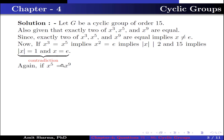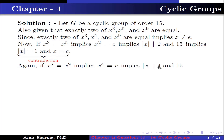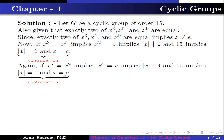Again, if X⁵ = X⁹, then X⁴ = identity. This implies the order of X divides both 4 and 15. Therefore the order of X is 1 and X equals the identity, which is again a contradiction.